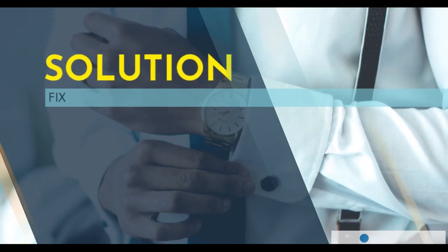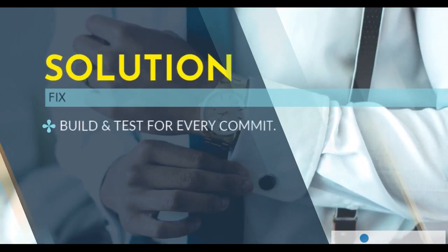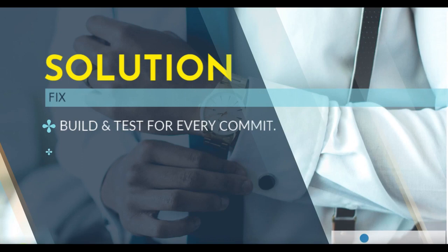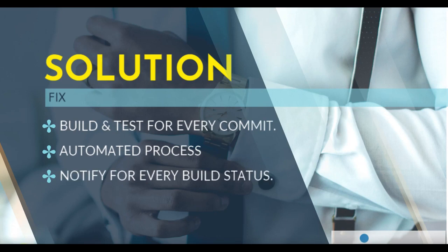The solution to this problem is regular build and test for every commit. So as soon as there is a code change, the code needs to be built and tested at the same time. But if the process is manual, this will not be possible. So you need to have an automated build and release process, and whenever there is a build and test of the code, the developer should get notified automatically.